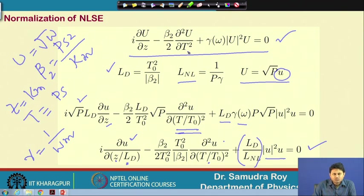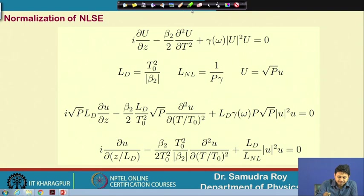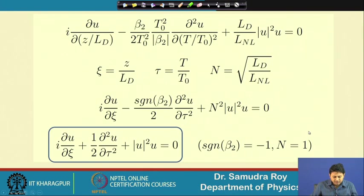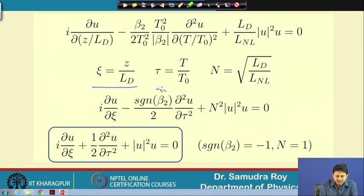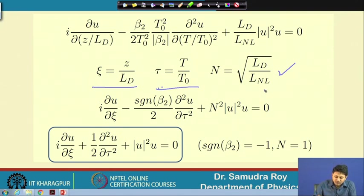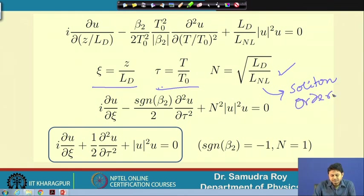By making this rescaling we can take an equation that has dimensions and arrive at an equation that is dimensionless in nature. We introduce the dimensionless propagation variable ξ = z/L_D, dimensionless time τ = T/T₀, and N = √(L_D/L_NL), which is called the soliton order.